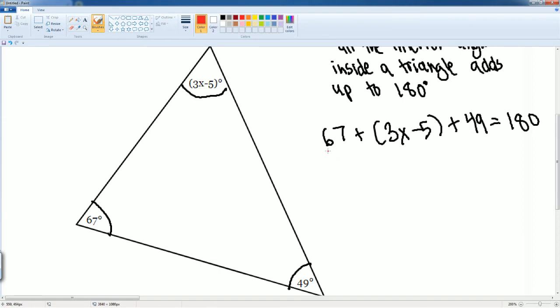We can combine some like terms. So we have the 67 minus 5 plus 49. 67 minus 5 plus 49. Make sure you have that minus right there. That's a minus 5 that was right there. Be very careful.